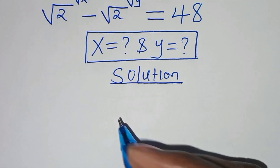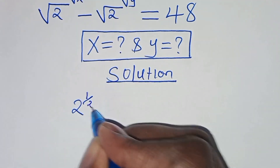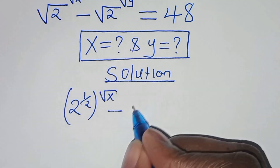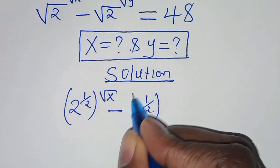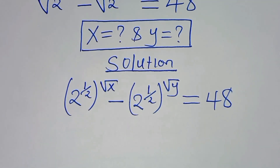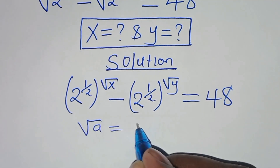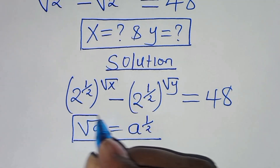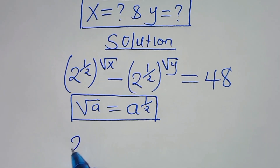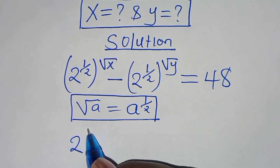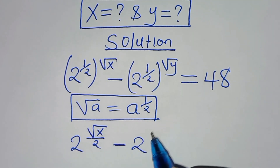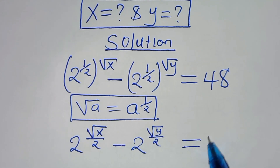We can express square root of 2 as 2 raised to the power of half, raised to the power square root of x, then subtract square root of 2 which is 2 raised to the power of half, raised to the power of square root of y, this is equal to 48. Applying the property that square root of a is the same as a raised to the power of half, we have 2 raised to the power of half times square root of x, this becomes square root of x over 2, then subtract 2 raised to the power of square root of y over 2, this is equal to 48.